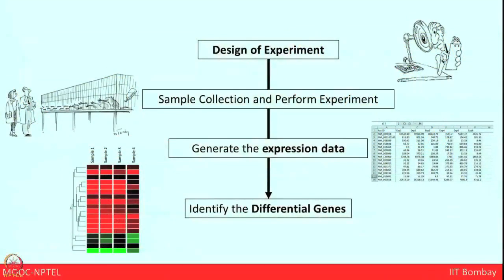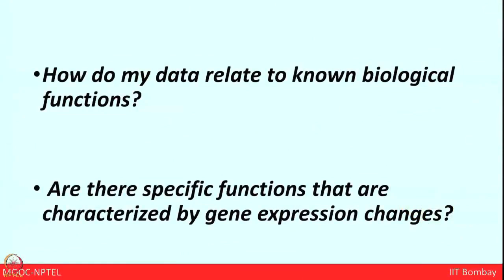Till now we have learned a lot about statistical power, primary analysis, and secondary analysis to generate the expression dataset. Now the important thing is that we got a very good pattern of differential gene regulation. The question is: what next? I want to start with two important questions — how does my data relate to known biological function? After secondary analysis, the most important thing to do is tertiary analysis: identify the functional group, based on pathway enrichment, network analysis, and PPI modules — protein-protein interaction modules.